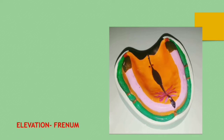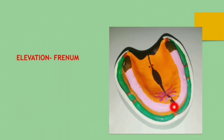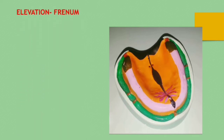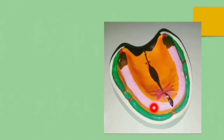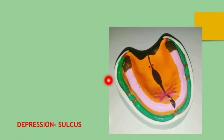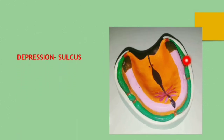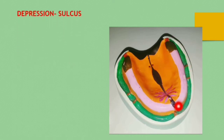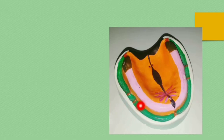On the cast model, you can appreciate these elevations — the brown areas — which are phrenums. And the green areas are depressions, known as the vestibule or sulcus. So the brown areas are elevations known as phrenums, and the green areas are depressions known as vestibular sulcus.